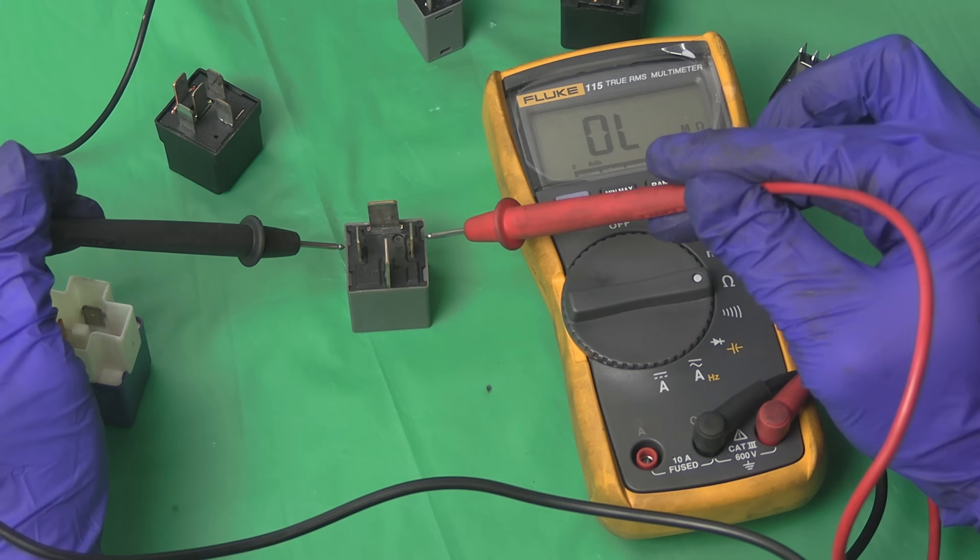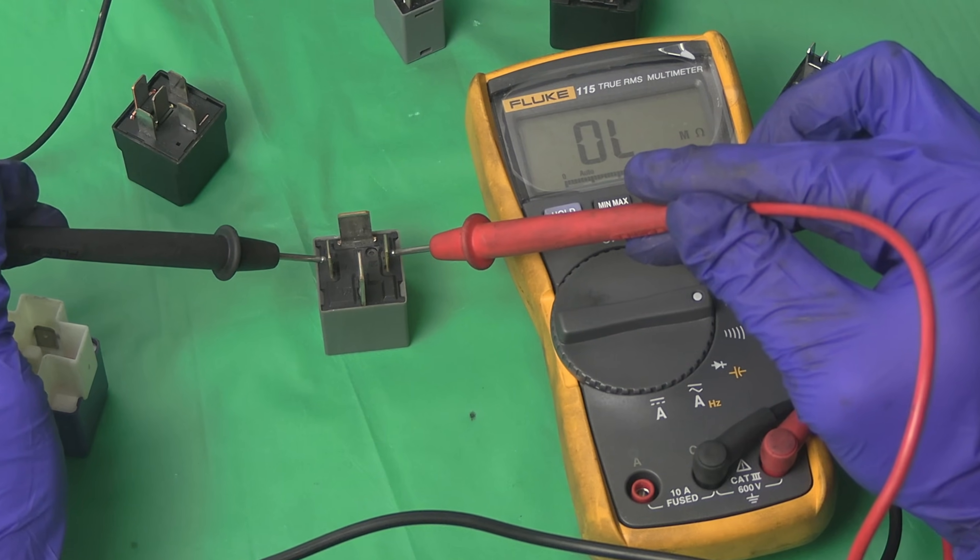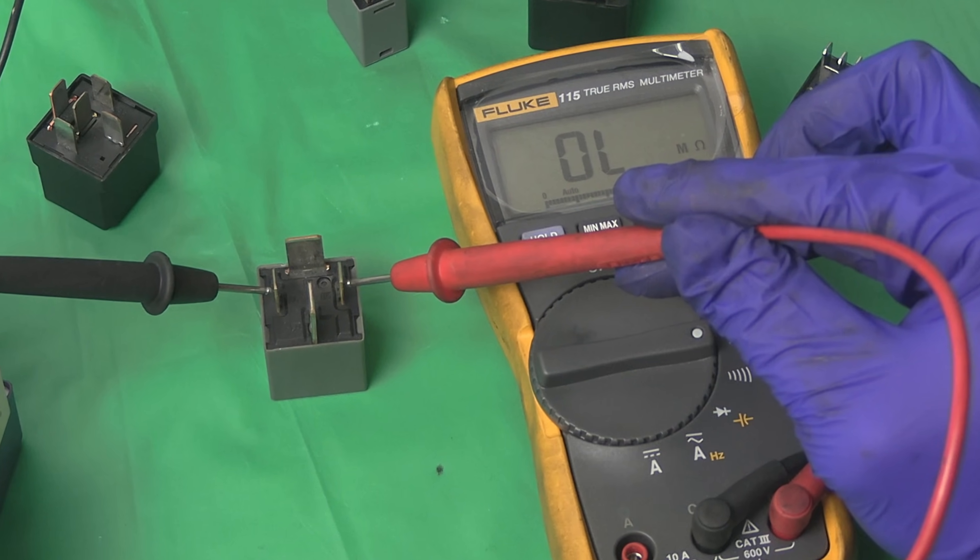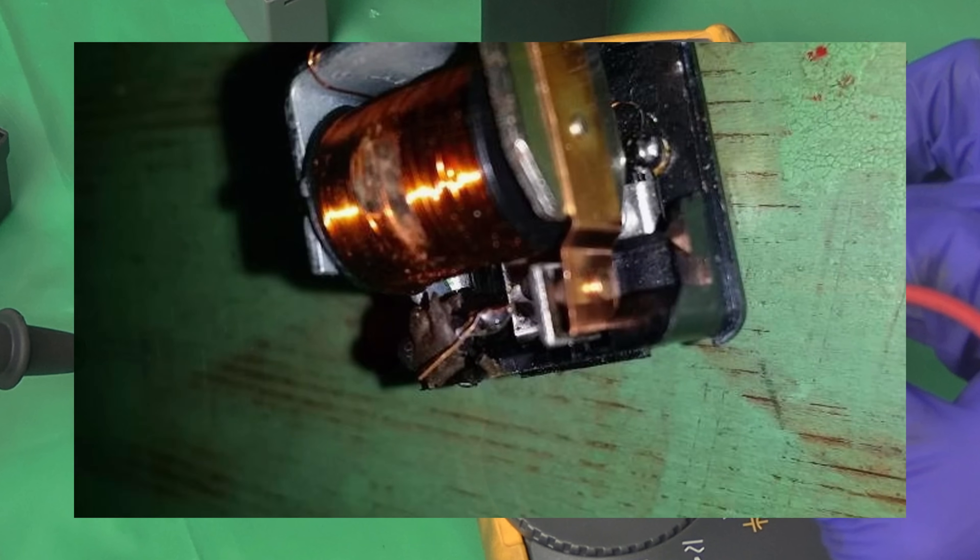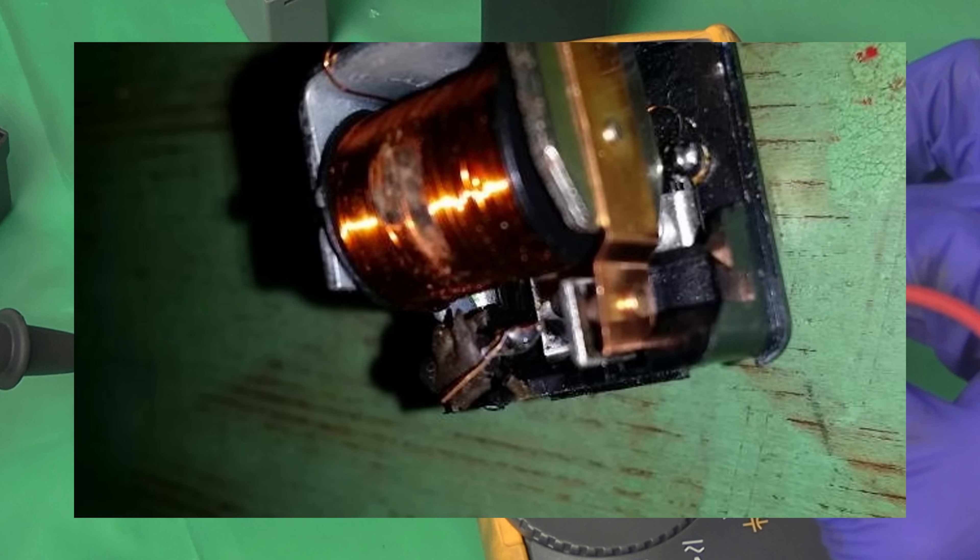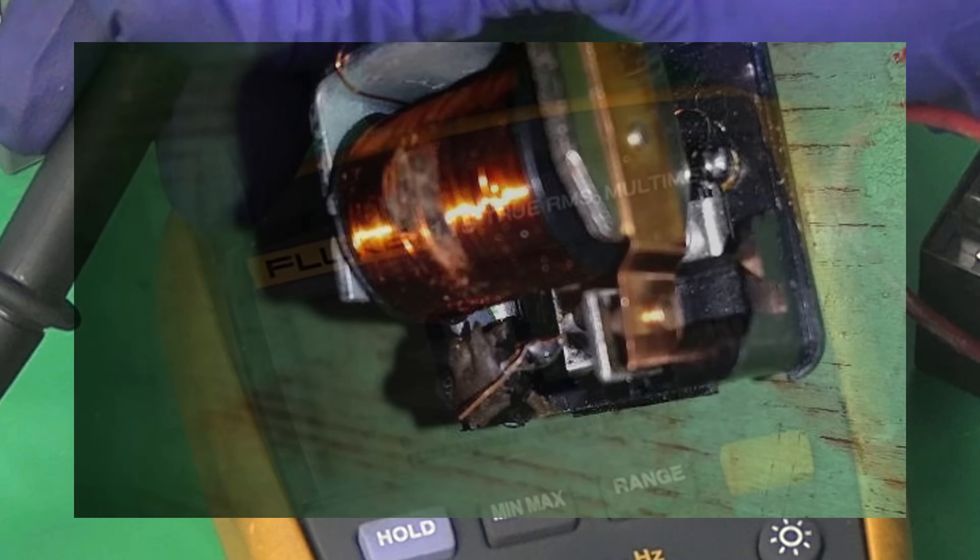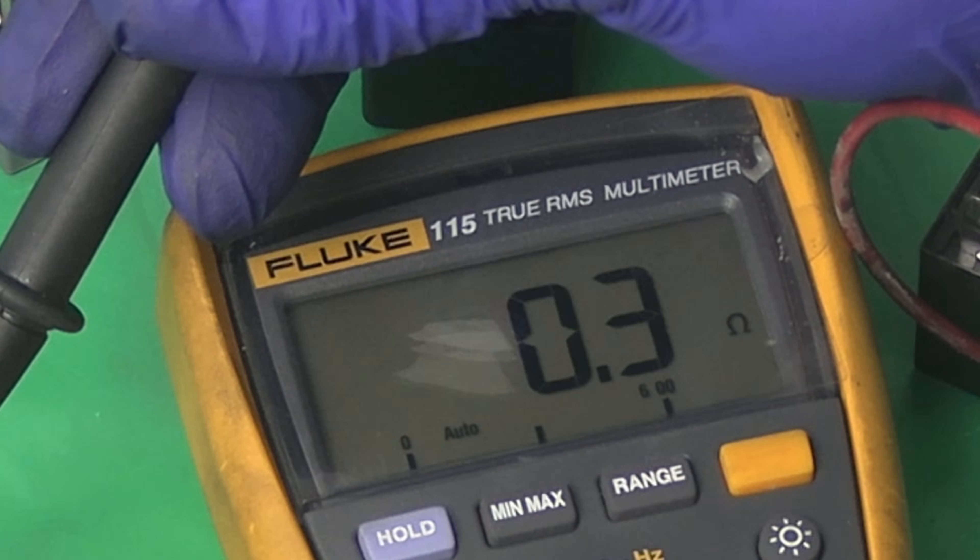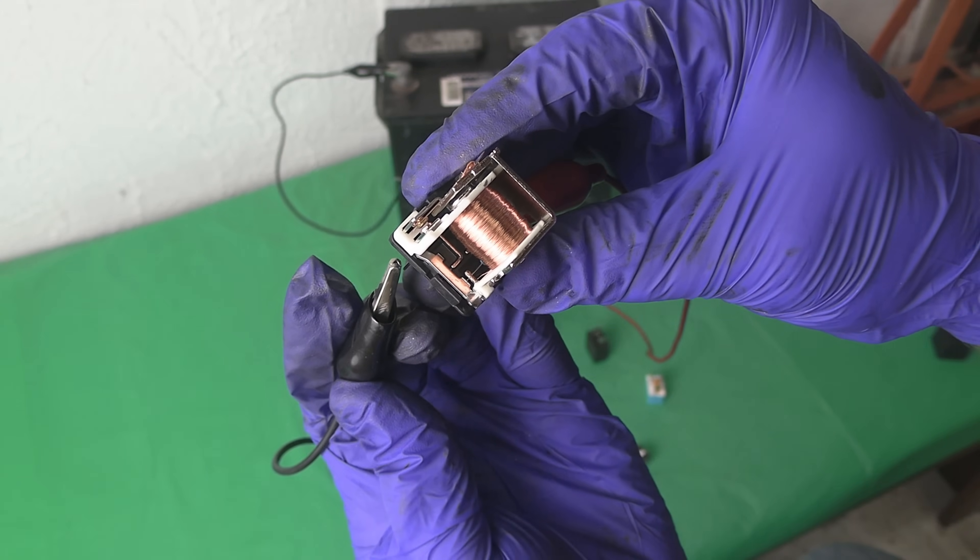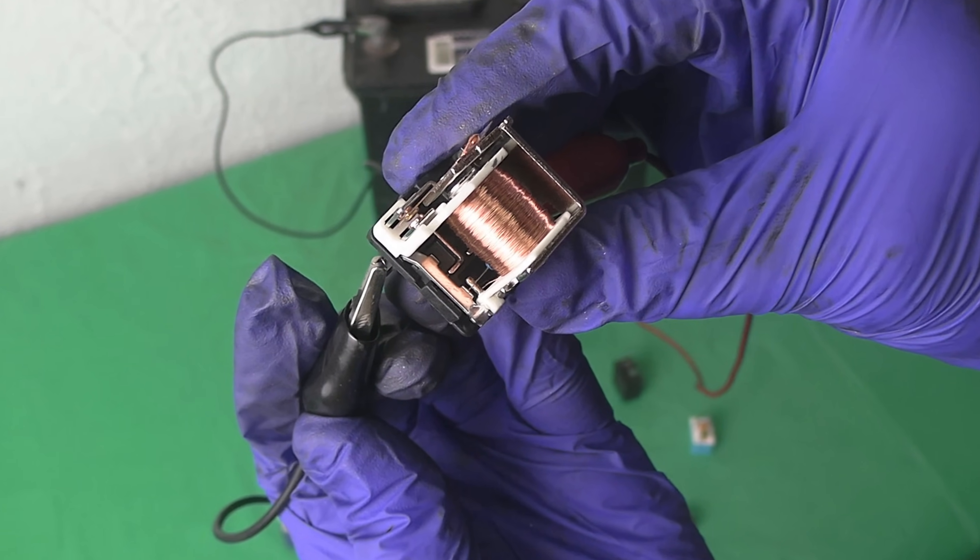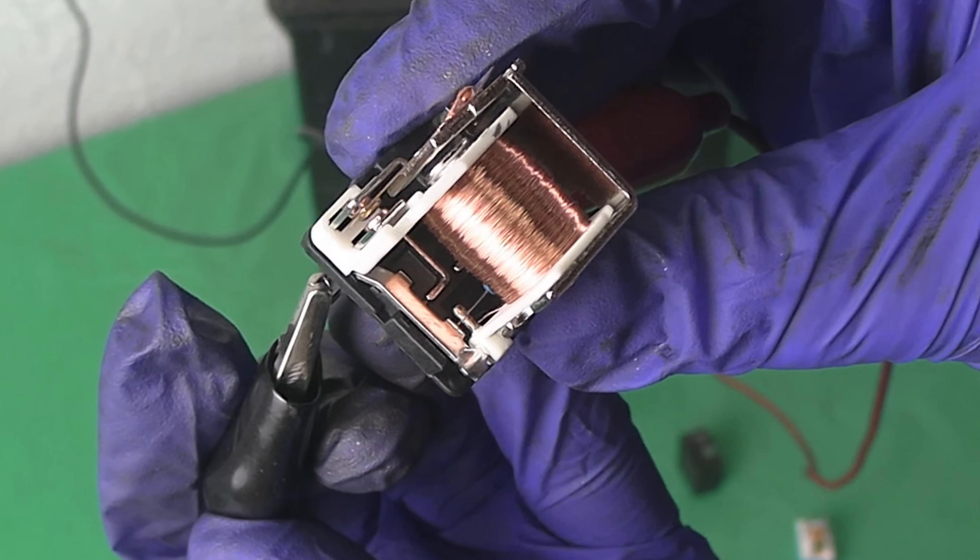If the multimeter continues to show OL, which stands for open line, there is no continuity between the two pins. Your coil wire must be broken somewhere, so the relay is bad. If the resistance is low, you may have a short in the coil, which won't let the coil create magnetic field strong enough to pull in the armature, in which case the relay is also bad and would have to be replaced.